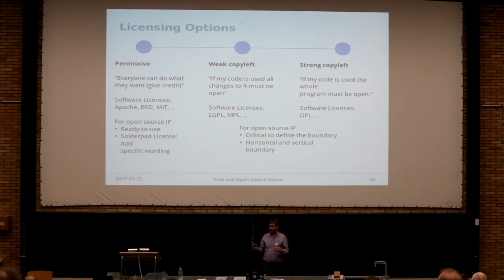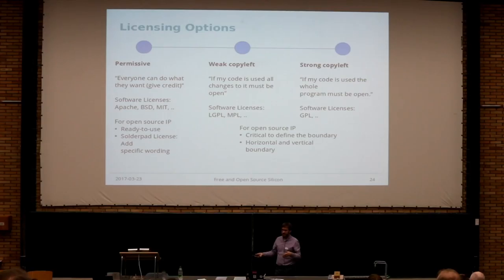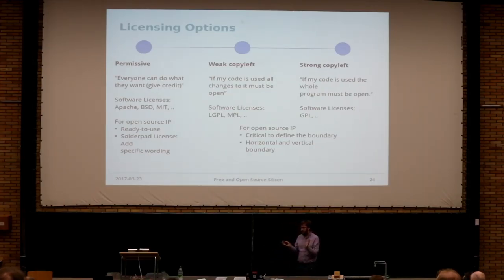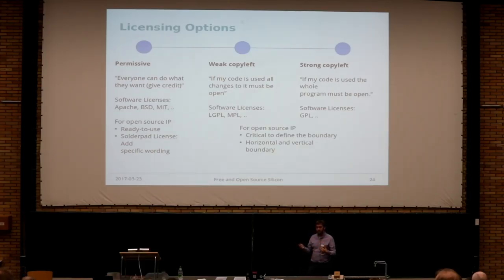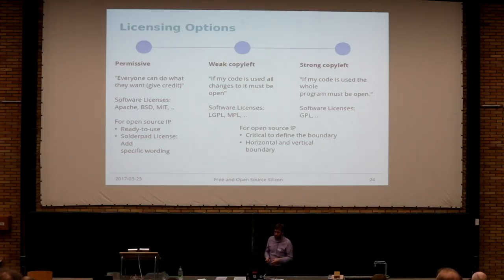The other dimension is the vertical — the virtual library — how deep does it go? Does it affect the mask? Do people have the right to the GDSII? Those are the two dimensions, and we just have to figure out how to define boundaries properly, because GPL as a software program talks about system libraries in the sense of something running on a PC, talks about programs, talks about source files. We have to find a way also for people to be really flexible in how they define boundaries — to extend it in the horizontal direction of the whole chip, for example, or just limiting it to source files and clarifying.